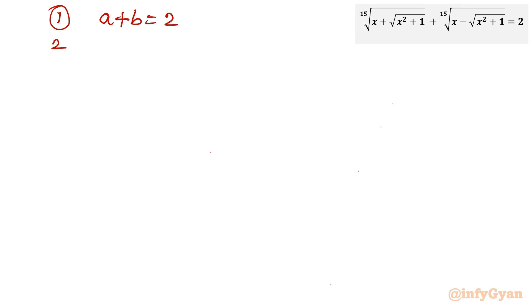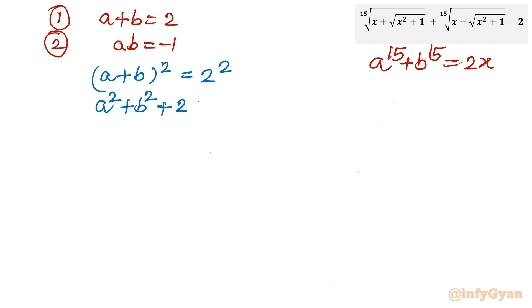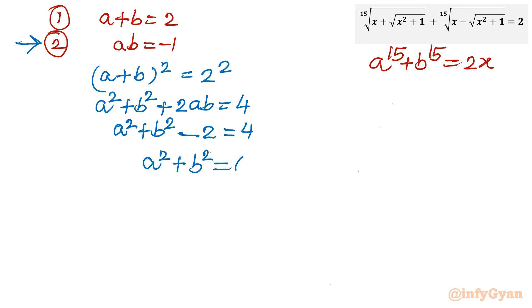I will take the square of equation 1: (a + b)² = 4. Expanding: a² + b² + 2ab = 4. Substituting ab = -1 gives a² + b² - 2 = 4, so a² + b² = 6.